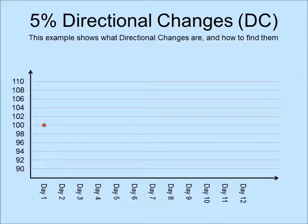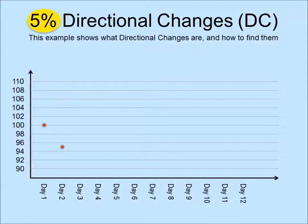Suppose we consider 5% to be significant. Suppose the price of an asset on day 1 is 100. At this point, we don't know whether we are in an upward or downward trend. If the price goes up to 105, which is 5% above 100, then we conclude that the market is in an upward trend. If, on the other hand, the price drops to 95 before it reaches 105, then we say that we are in a downward trend.